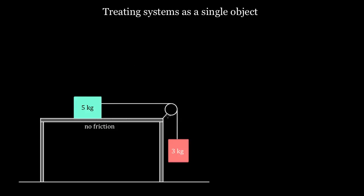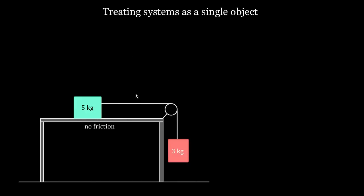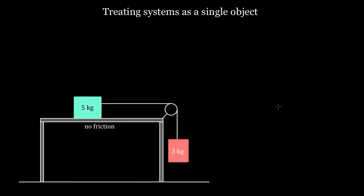What I'm claiming is this: if you ever have a system where multiple objects are required to move with the exact same magnitude of acceleration — because maybe they're tied together by a rope, or pushing on each other, like many boxes in a row — then you can simply find the acceleration of that system as if it were a single object, using Newton's second law: all of the external forces on the system divided by the total mass of the system.